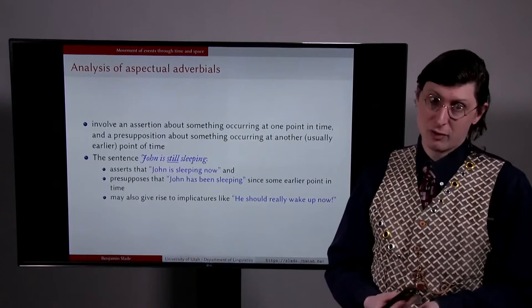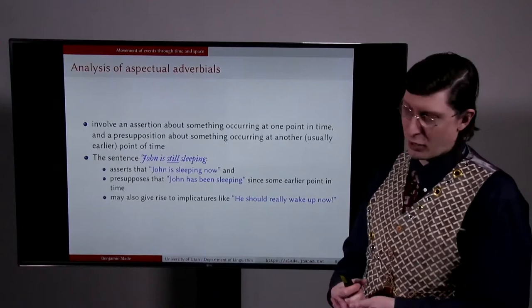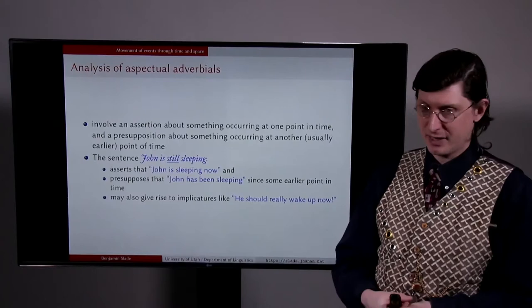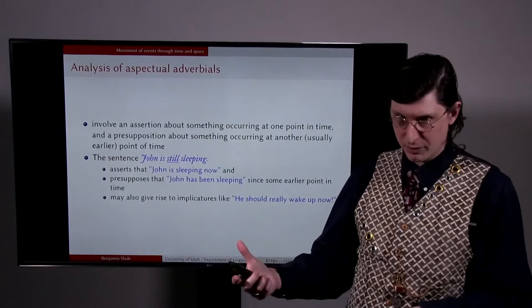These words involve or trigger an assertion about something that occurs at one point in time or along a scale, and a presupposition about something occurring at another, usually earlier point in time or other point on the scale. For instance, the sentence 'John is still sleeping,' which contains the aspectual adverbial still, involves an assertion that John is sleeping now, and it presupposes, that is, takes for granted, that John has been sleeping since some earlier point in time.